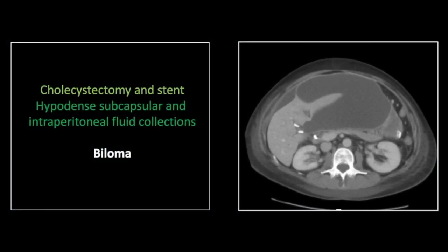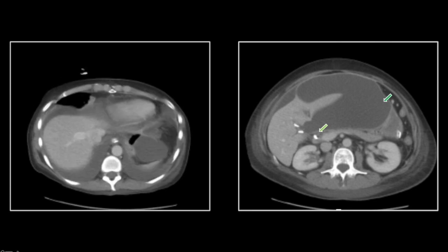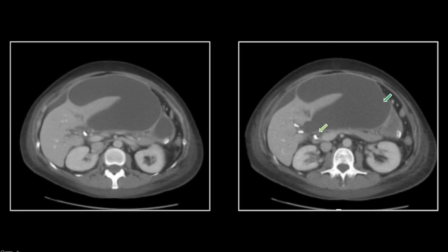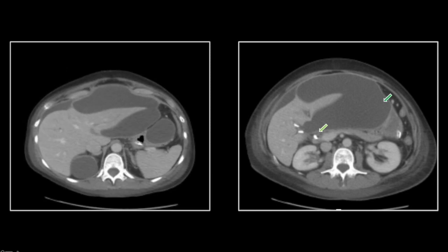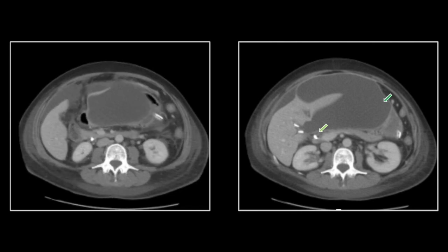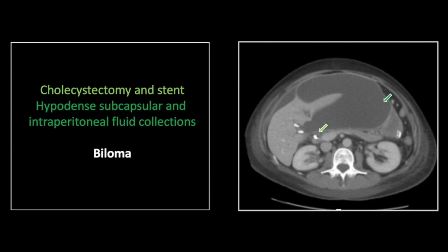Our next case is a biloma — the frequent dreaded complication of cholecystectomy. You can see obviously multiple cholecystectomy clips are present, as well as a common duct stent. In a very typical distribution and location, you can see this large subcapsular hypodense fluid collection outlining the left liver lobe and extending to the portal region, where it ultimately did originate. That is a pretty typical distribution for a post-operative biloma, with its origin there in the portal region in the region of those cholecystectomy clips.